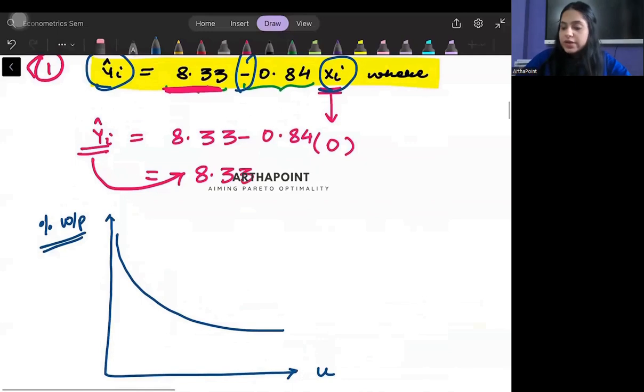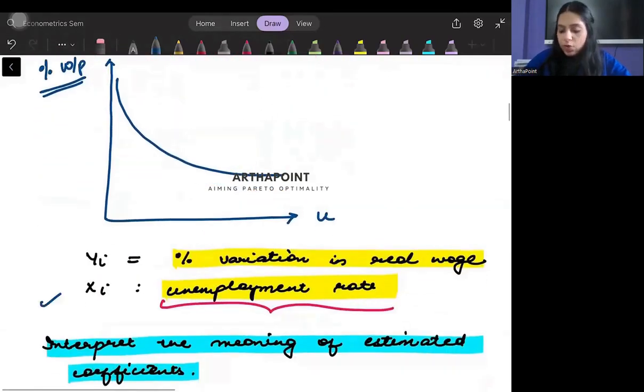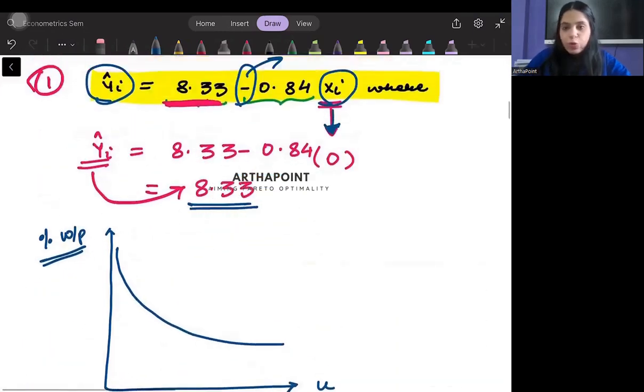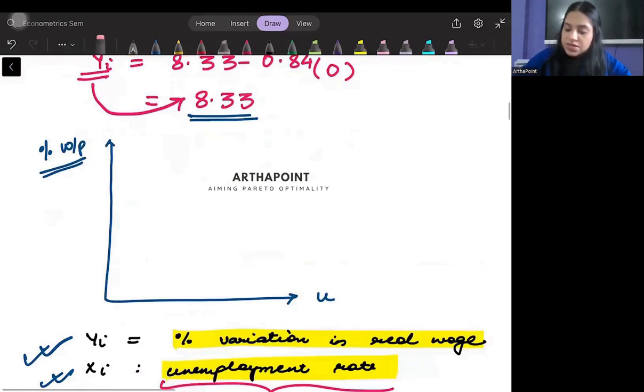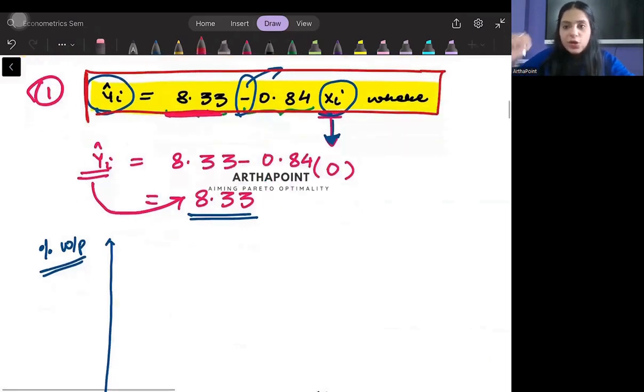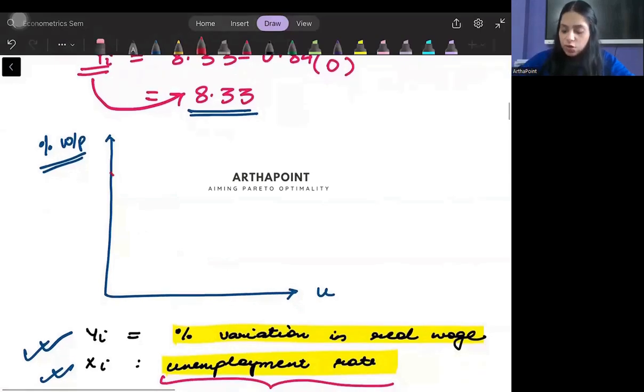When my unemployment rate is plugged in at 0, I get that the percentage variation in real wage is 8.33. So if I were to draw this curve, of course I won't be able to draw a curve like this because this is linear. This represents a linear line. So I cannot have a curve; I need to draw a linear line here. So this intercept will be 8.33.